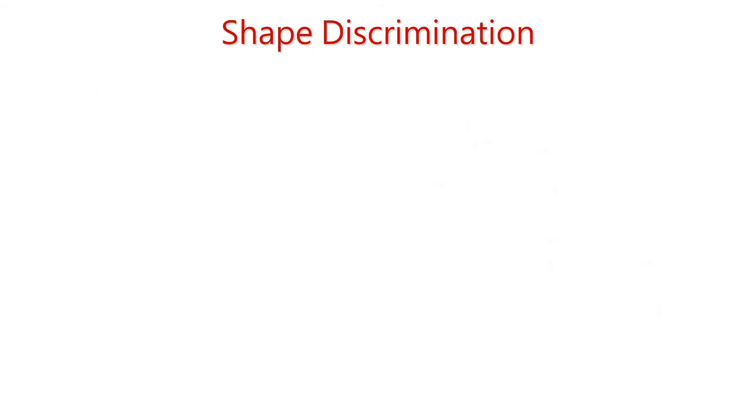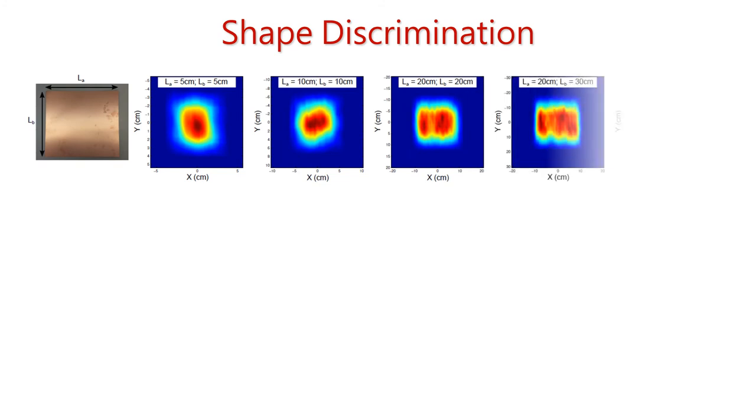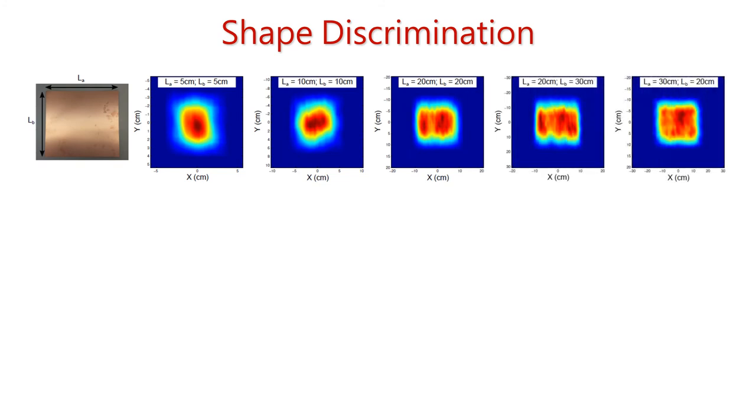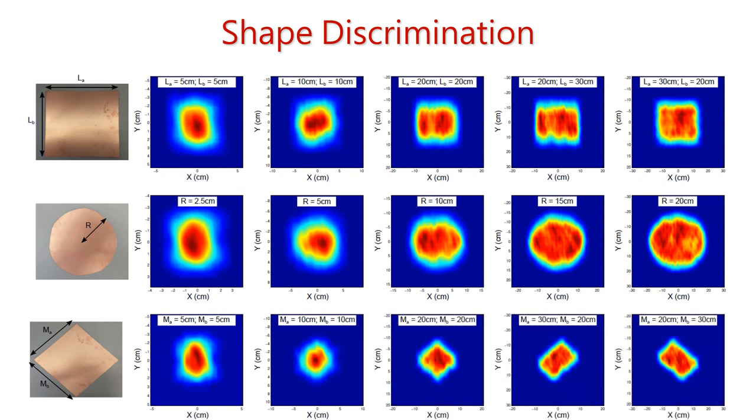To start with, we used basic shapes to understand how well we can discriminate the shapes using our imaging system. First, we use this square object with different lengths and breadths and image it. As you can see, when the object is very small, it is hard to distinguish or determine the shape of the object. We also use different other shapes like circular and rhombus. Again, when the objects are very small, the shape discrimination is challenging. However, for a sufficiently large object, we can not only discriminate the shape but also measure their dimension accurately.